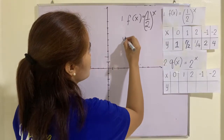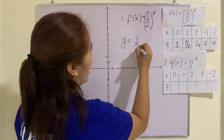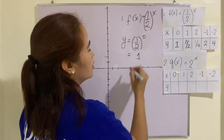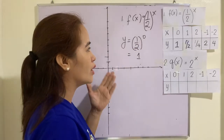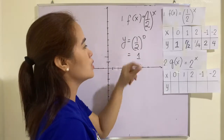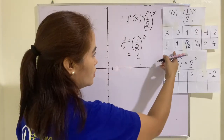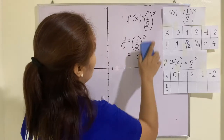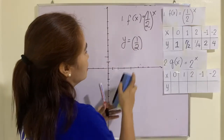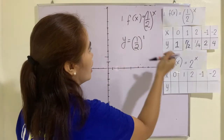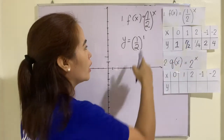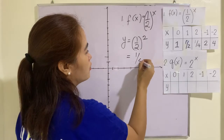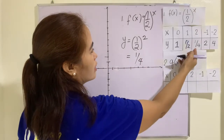So y is equal to 1/2 raised to 0, which equals 1. Remember that any base other than 0 raised to 0 is equal to 1. If we replace x by 1, then 1/2 raised to 1 is equal to 1/2. What about if x is 2? So 1/2 times 1/2 is 1/4.